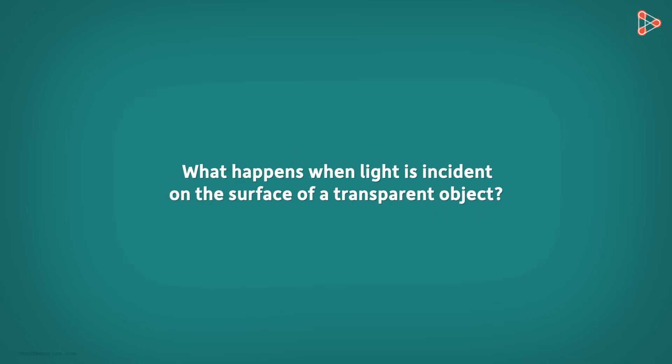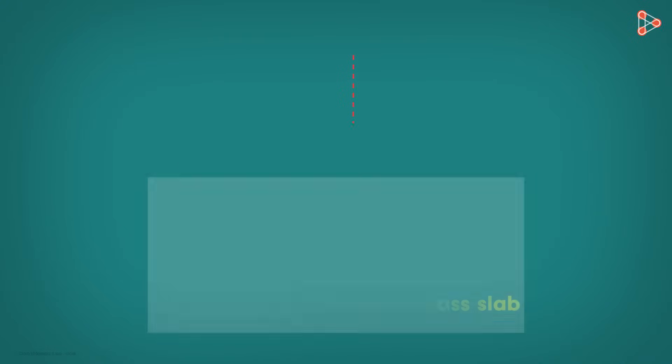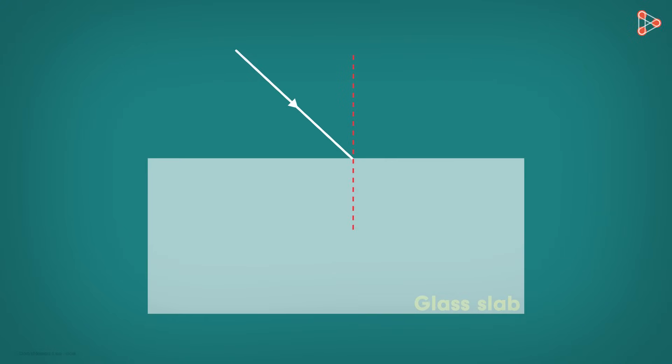What happens when light is incident on the surface of a transparent object? Consider a glass slab and suppose a narrow beam of light is incident on one side. The beam of light partially reflects, partially refracts, and it is even partially absorbed by the object.